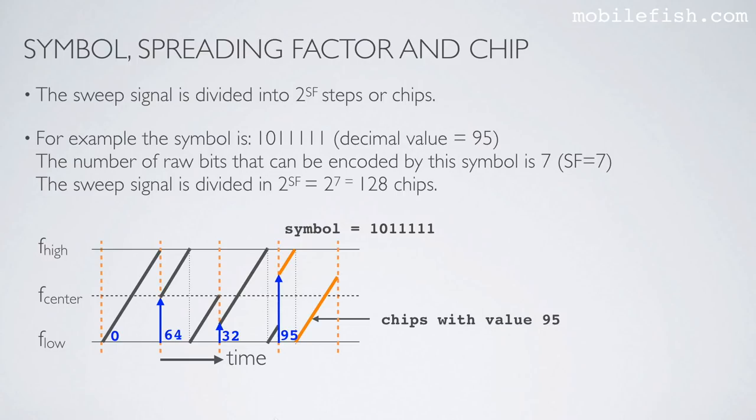So what are these chips? Well, to keep this tutorial as simple as possible, take this sweep signal and chop it into 128 pieces and call each piece a chip. And if you order the chips in this arrangement, it represents decimal value 64.